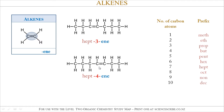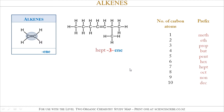If the double bond was at the fourth position, you might think it would be called hept-4-en, but it's actually still hept-3-en, because if you numbered it from the right-hand side to the left-hand side, you would end up naming it as hept-3-en. Remember, if you ever have a choice, go for the one where the number is minimized.